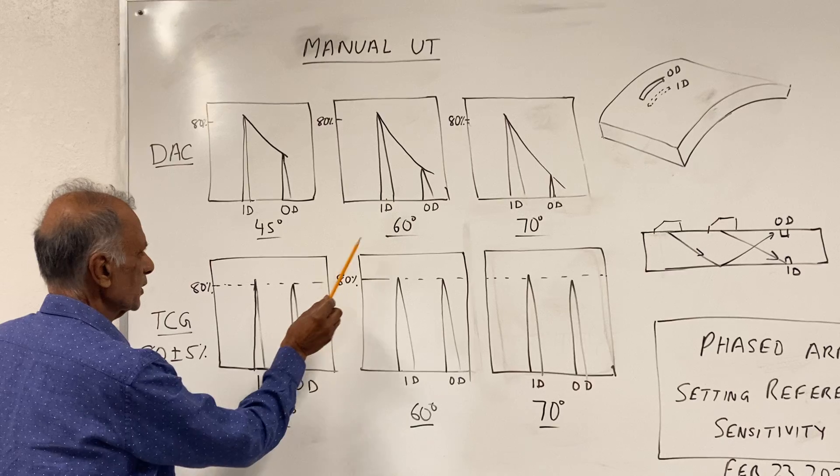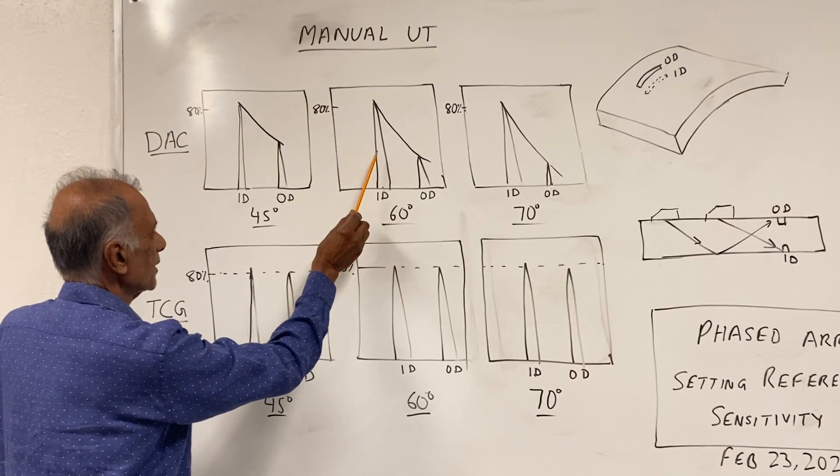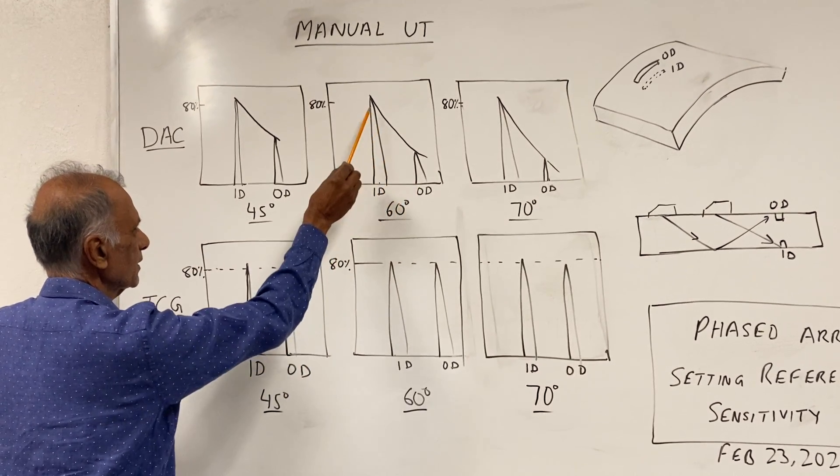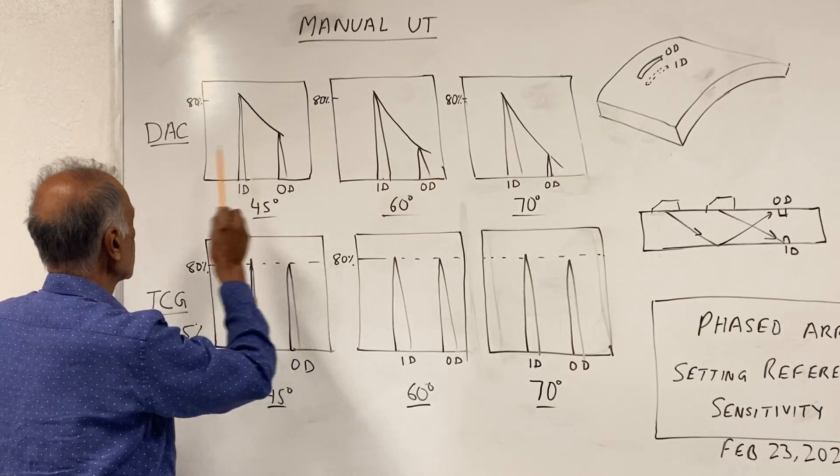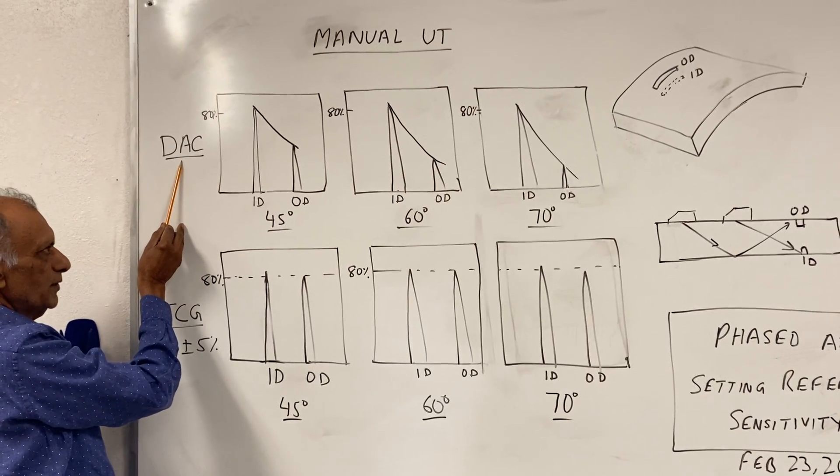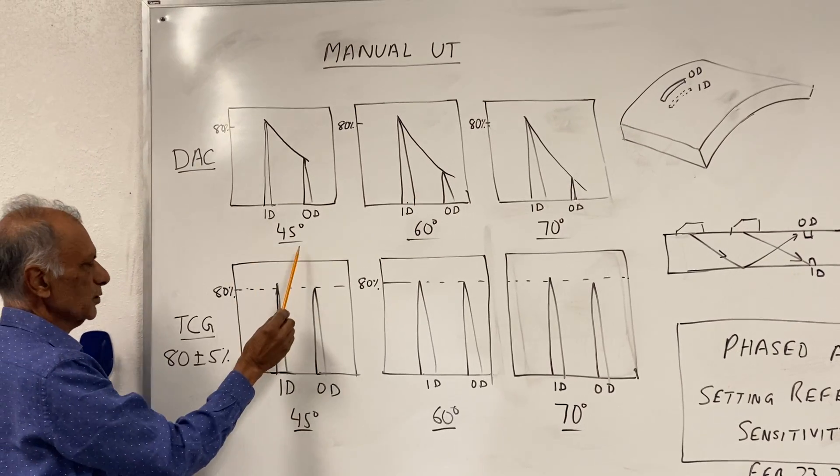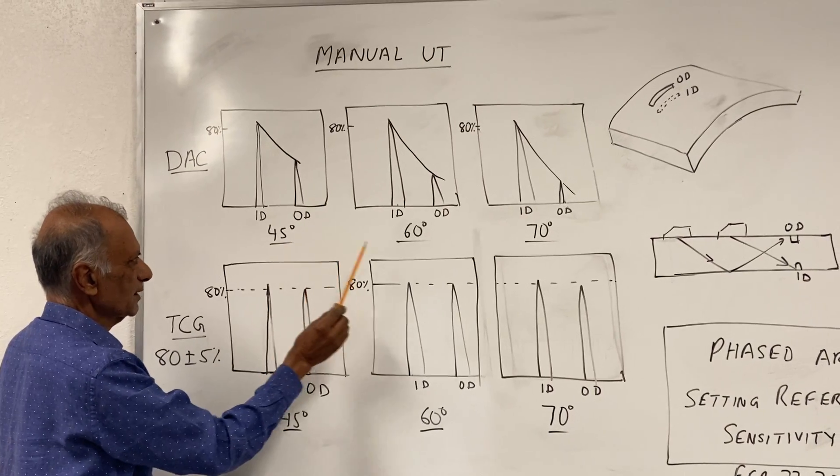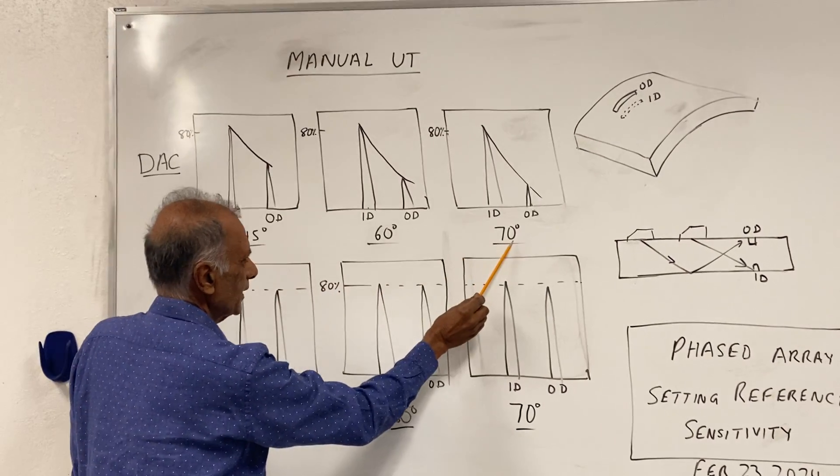Then we do the same thing for the 60 degrees: ID notch, OD notch. This is our DAC curve which is mentioned right here. We do it for 45 degrees, 60 degrees, and 70 degrees.